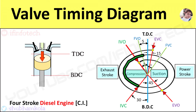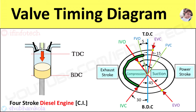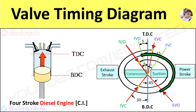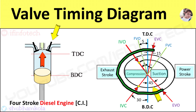The combustion of the charge releases hot gases, which increases pressure at constant volume. This high pressure and high temperature of the burnt gases forces the piston to perform the power stroke. This stroke is also known as the expansion or working stroke, and the engine produces mechanical work during the power stroke.